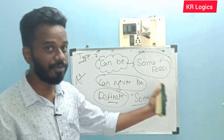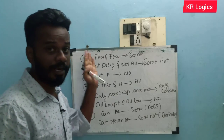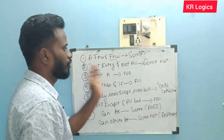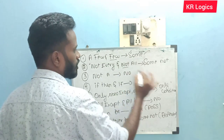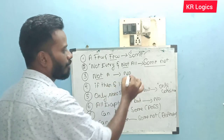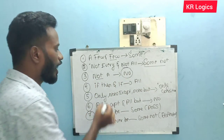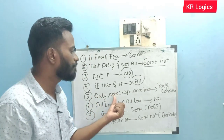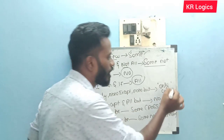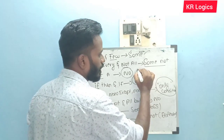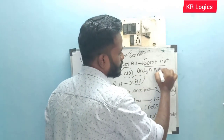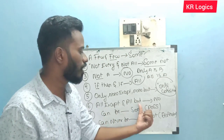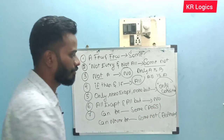Useful — one by one. This is a type recall. Few and few — some, some. Not every, not all — some not. No condition. If-then — all, condition. Only, none but — only condition check. Only A is B — all B is A, condition check. All except, all but — no condition. This is 6 types.